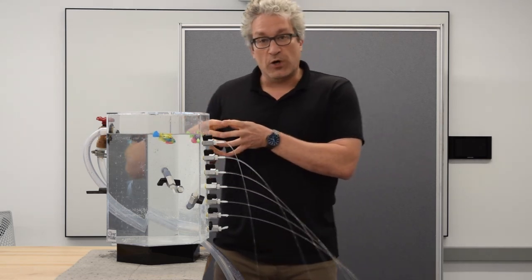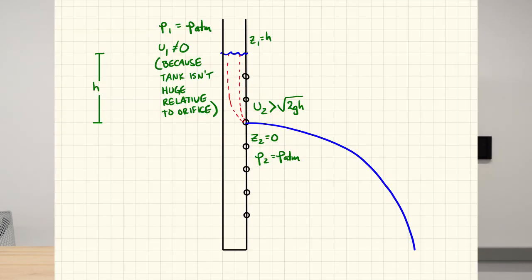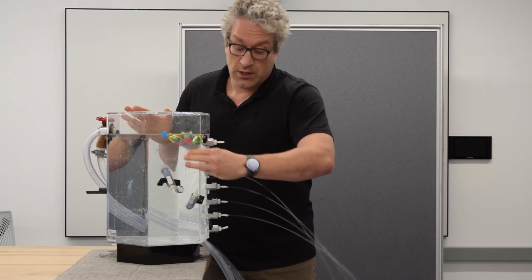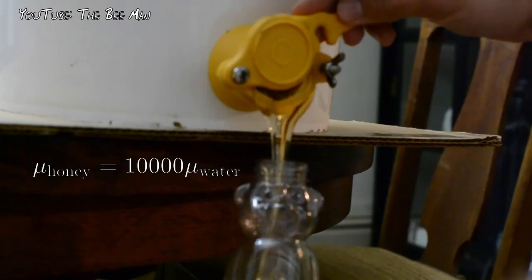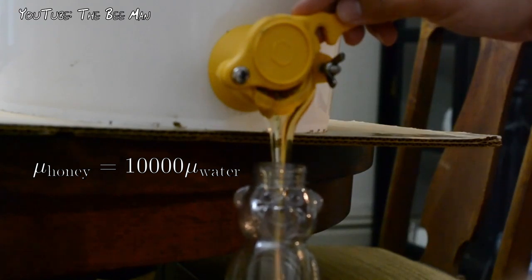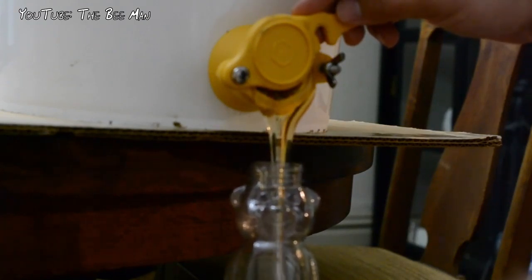One, we could make the tank too small. If we made the tank too small, we wouldn't get the same results. Another thing we could do is replace the water with honey. Because honey is 10,000 times as viscous as water, we would find that this flow is viscous both in the tank and outside.